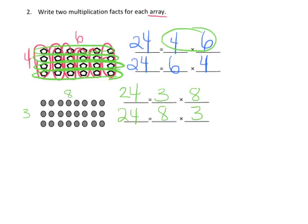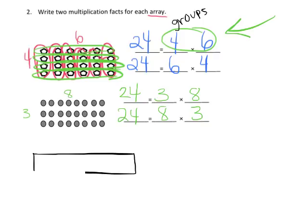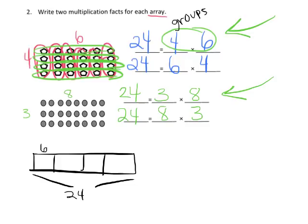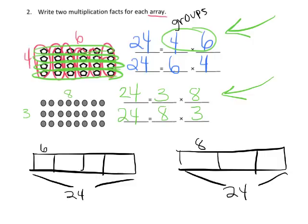Then of course we use the commutative property and say eight times three is also 24. Now if we wanted to record that as a tape diagram — this isn't asked, but this is essentially saying four groups of six, so what that might look like would be four groups of six equaling 24. Similarly, this one looks like three groups of eight, so the tape diagram would look like three groups of eight equals 24.